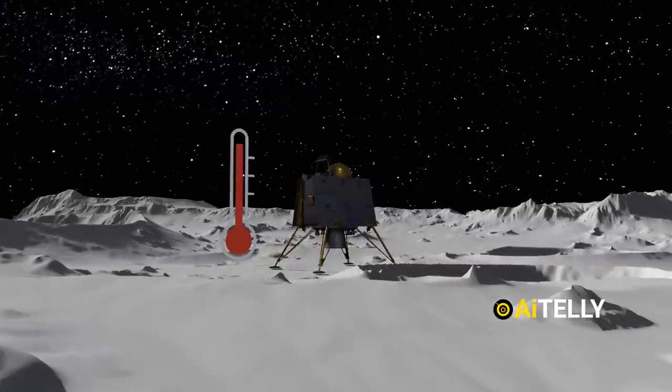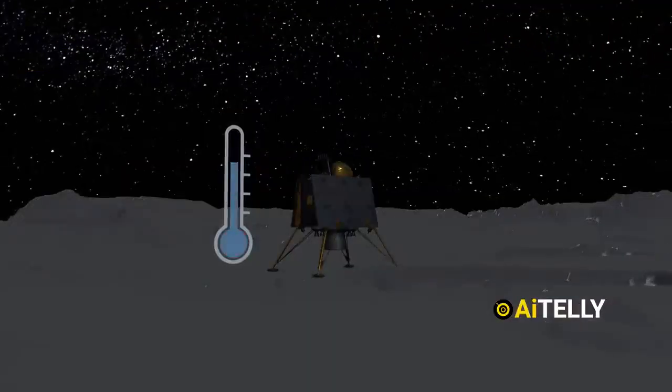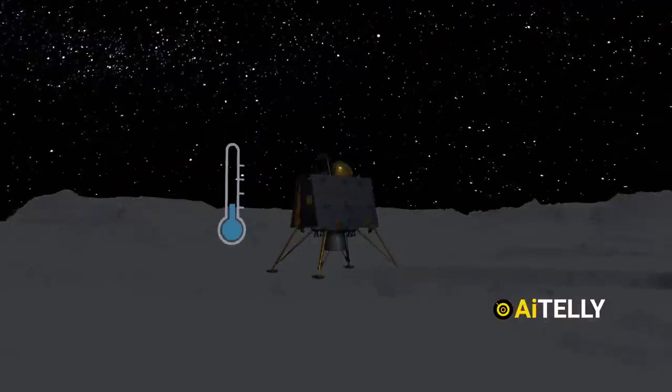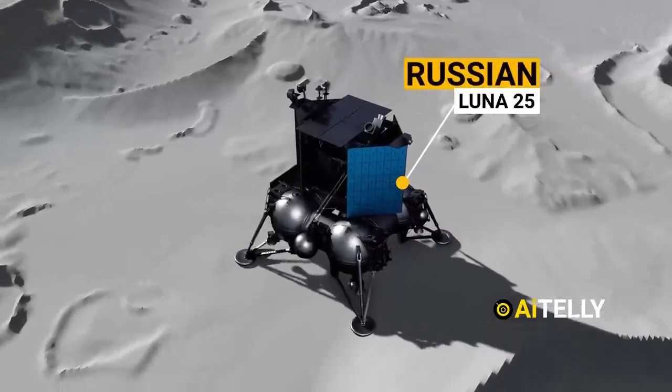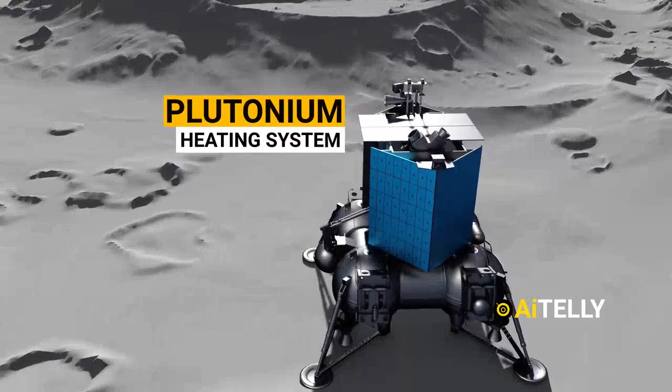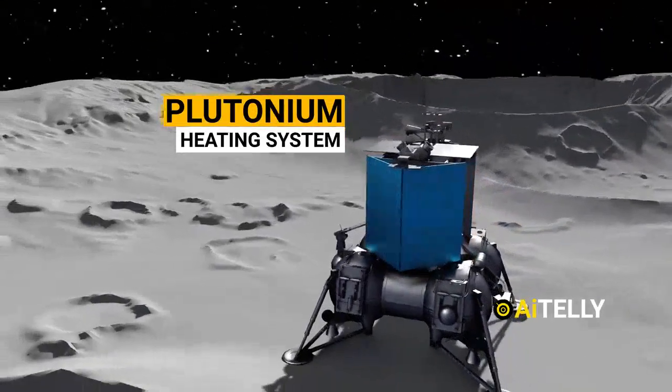This is due to the extreme cold on the south pole of the Moon, freezing all its equipment. It is because there is no sunlight to power the lander and the orbiter. But the Russian Luna 25 might survive harsh freezing temperatures considering it uses a radioisotope device to generate heat with plutonium at night.